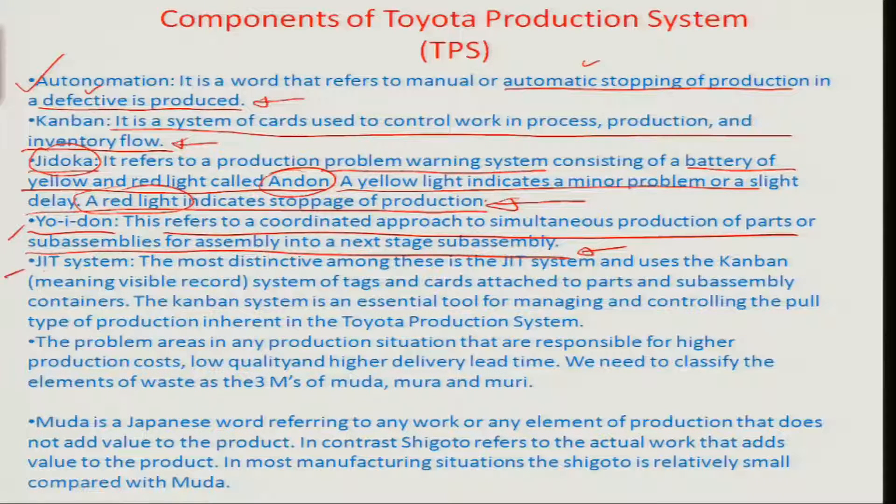The JIT system is the most distinctive among all systems used for the TPS, and it uses the Kanban. Kanban in Japanese means 'visible record' — it is a system making inventory requirements visible at different places using tags and cards attached to parts and sub-assembly containers. There are many kinds of Kanbans: production Kanban, signal Kanban, lot-ordering Kanban, and emergency Kanban, each with a certain utility. This module will investigate the basic differences among the different types of Kanbans and how they can be optimized so that production flows smoothly from the beginning to the end station.